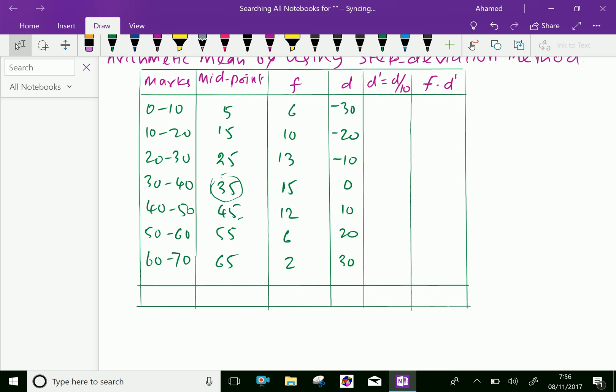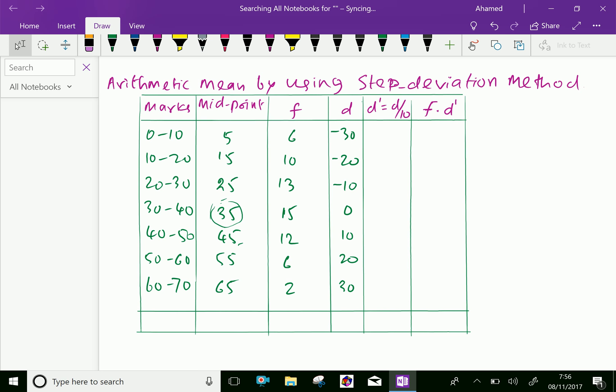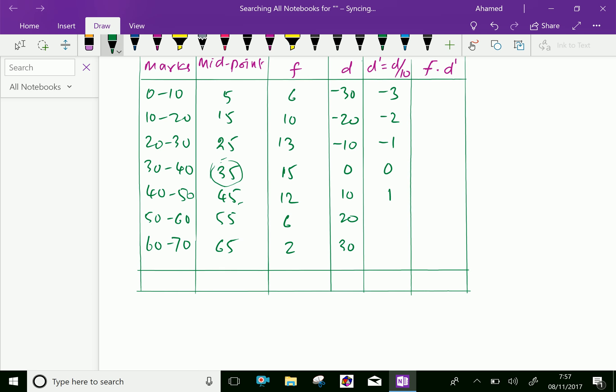Now we find D', which means D over 10. Here, 10 is the class interval - 0 to 10, 10 to 20, everywhere the interval is 10. So minus 30 over 10 is minus 3, minus 20 over 10 is minus 2, minus 10 over 10 equals minus 1, 0 over 10 is 0, 10 over 10 is 1, 20 over 10 is 2, and 30 over 10 is 3.